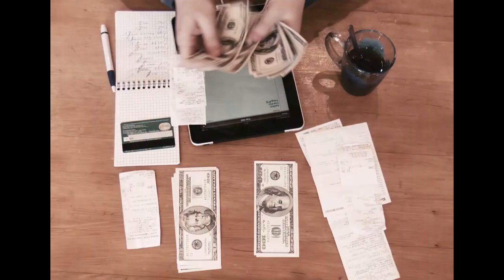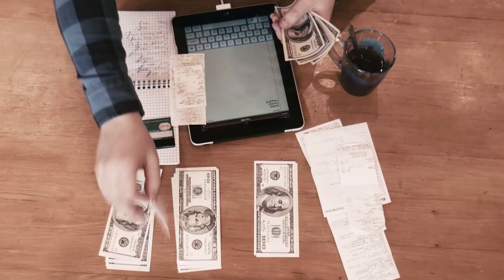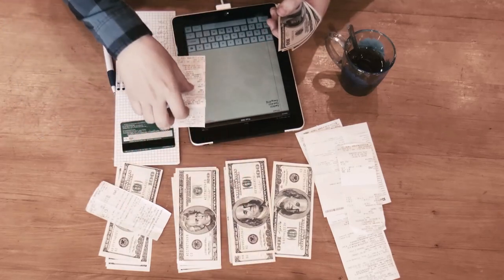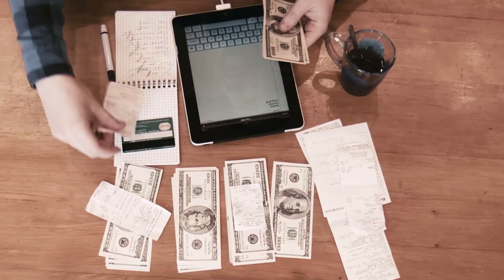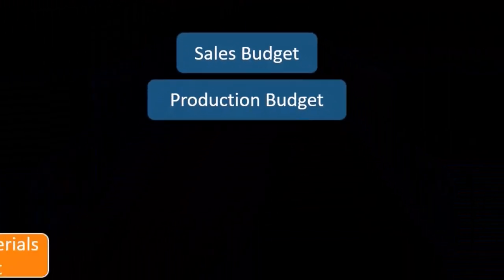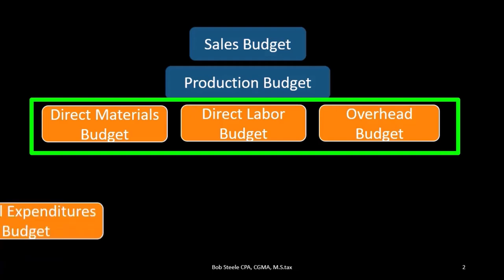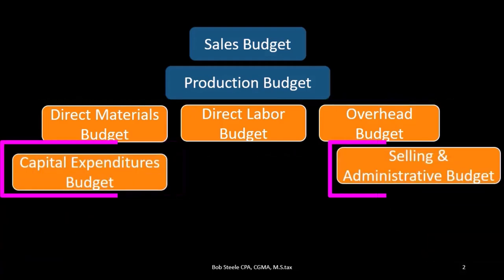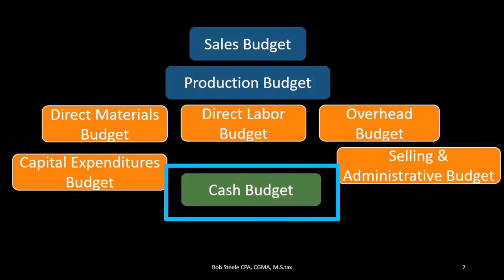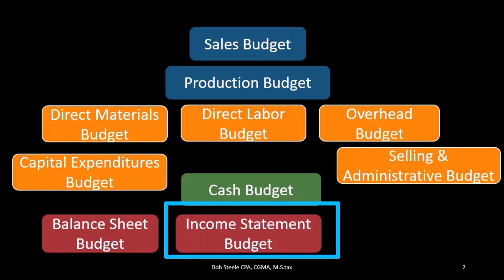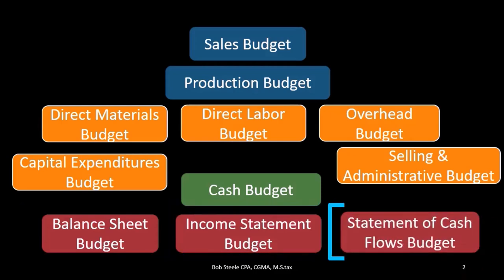The budget needs to be done in a specific order because we have to know some information before we can move forward to other components. We start with the sales budget — we need to know how many units we're going to sell and what the sales amount will be. Then we go to the production budget, then the direct materials budget, the direct labor budget, and the overhead budget. Then we move to the capital expenditures budget, the selling and administrative budget, and finally the cash budget, giving us cash inflows and outflows. Then we arrive at our budgeted financial statements: the budgeted balance sheet, the budgeted income statement, and the budgeted statement of cash flows.